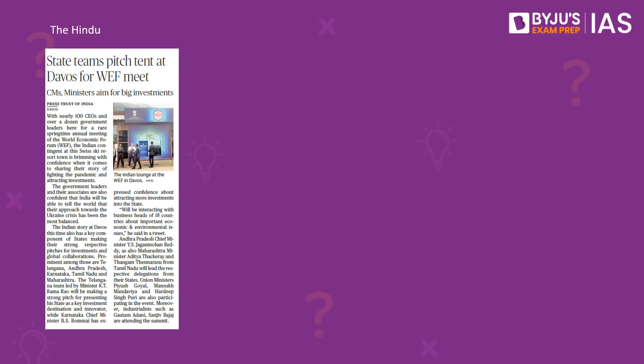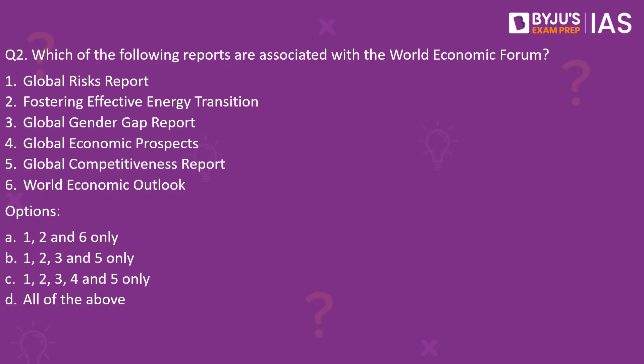This article from today's The Hindu notes the ongoing session of the World Economic Forum at Davos. One of the notable features of the ongoing summit is the participation of India's chief ministers, as states try to engage with business leaders to attract more investments. Regarding the question: Global Risk Report, Fostering Effective Energy Transition, Global Gender Gap Report, and Global Competitiveness Report are all reports associated with the World Economic Forum.